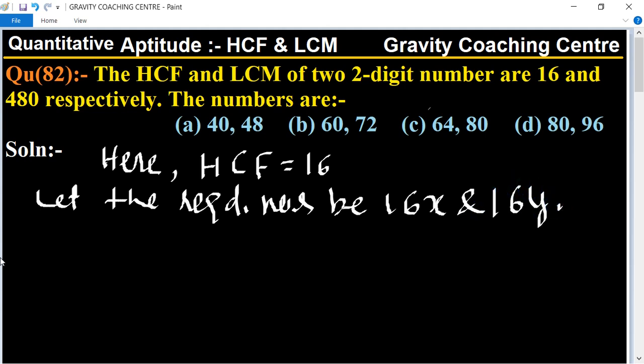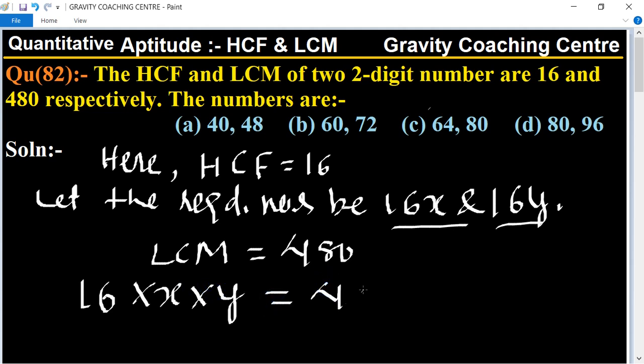According to the question, LCM is given, so LCM is 480, and the LCM of the two numbers is 16 into x into y equal to 480. Cancel by table of 16: 16 into 30.